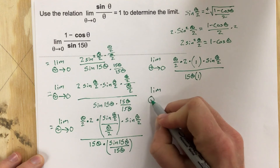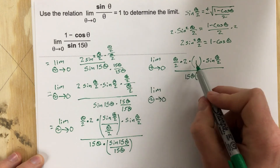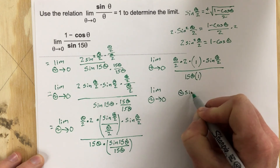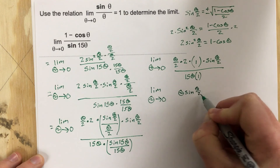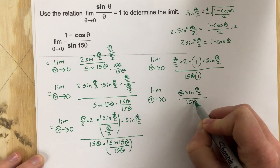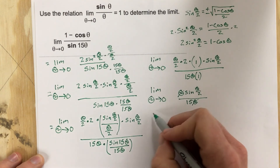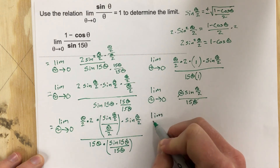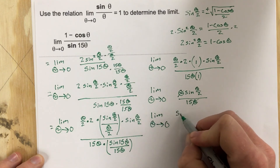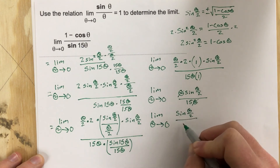Now we can start to simplify. The 2's cancel, and we end up with theta times sine theta over 2, all over 15 theta. We can then cancel the theta, so the denominator is gone, and we're left with sine theta over 2, all over 15.